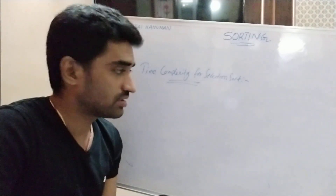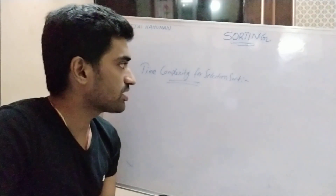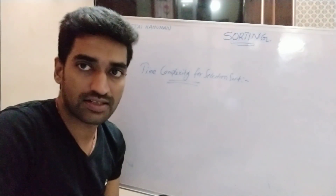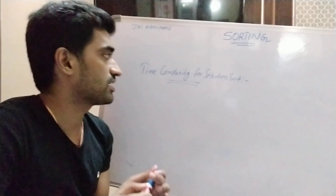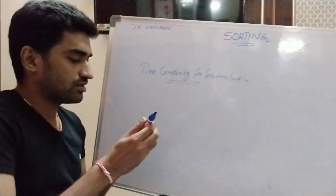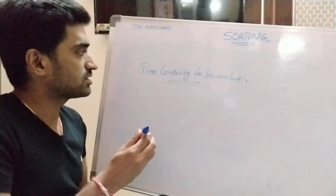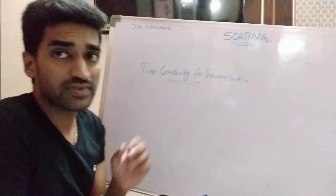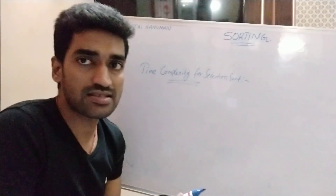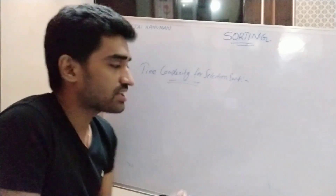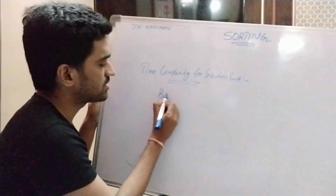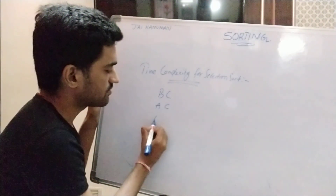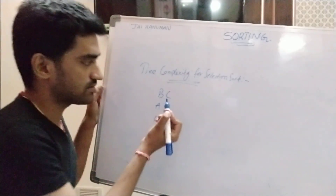And one more thing — in this session we are also discussing time complexity for the selection sort mechanism. We know very well that time complexity can be measured with the help of three cases: best case, average case, and worst case.